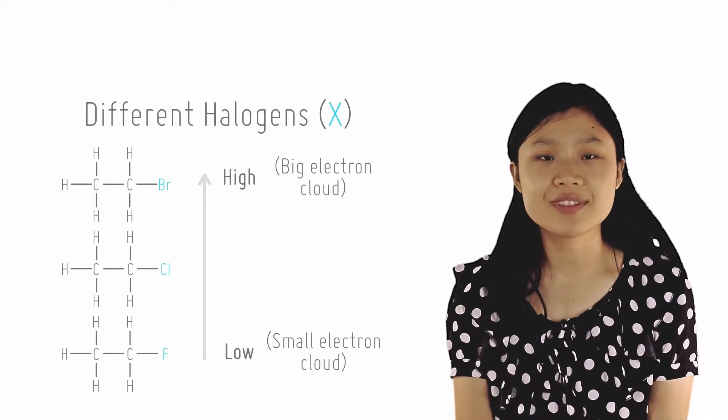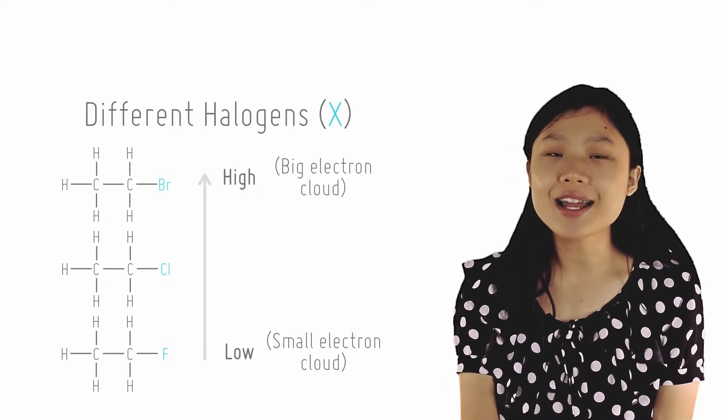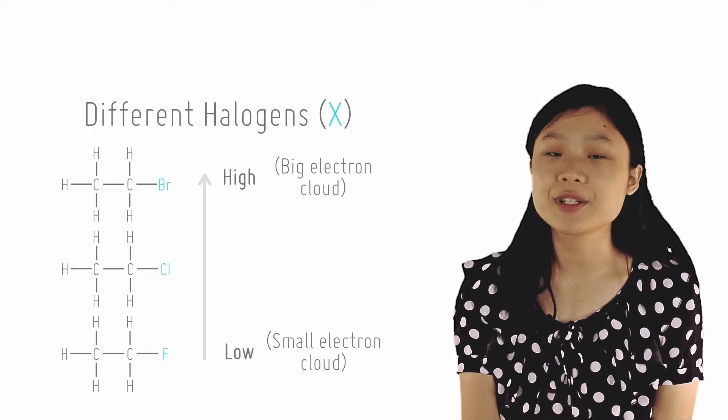Although the compounds of larger halogens have less polar C-X bonds, ID-ID factors are more important in affecting boiling points.